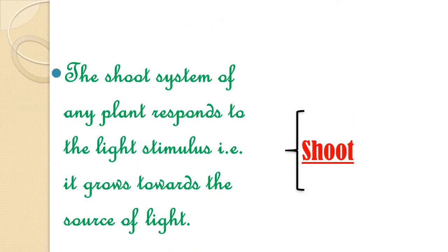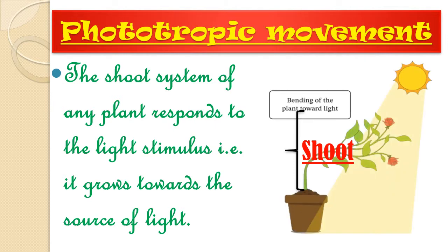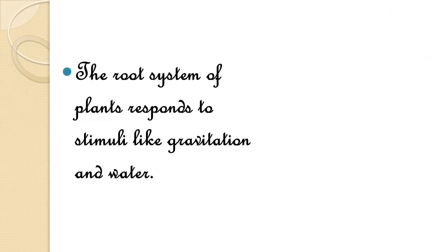The shoot system of a plant responds to the light stimulus — it grows towards the source of light. The movement shown by the plant towards the source of light is called phototropic movement or phototropism. As you can observe in the picture, the plant is bending towards the sunlight. The shoot is the part above the soil, while the root system is below the soil.